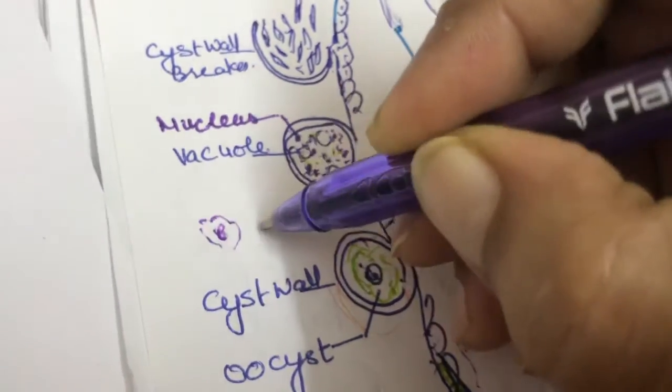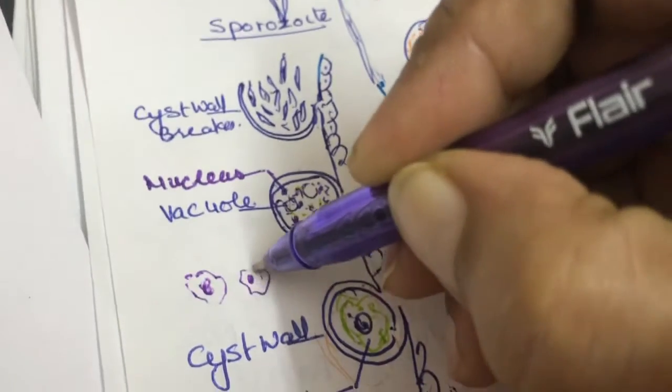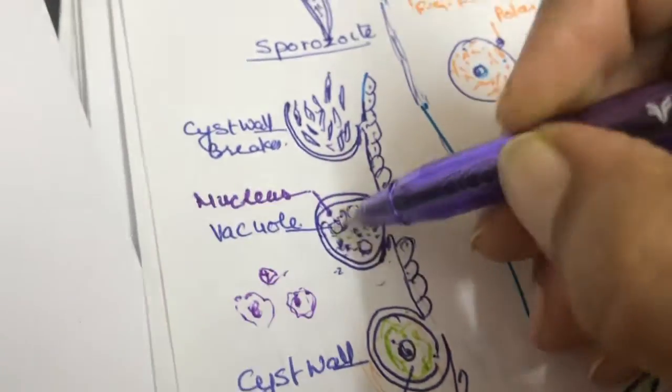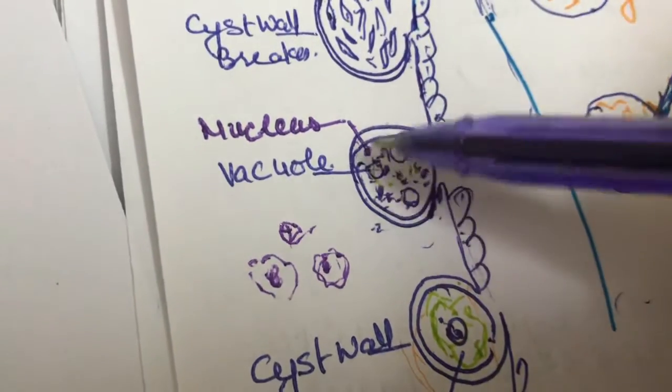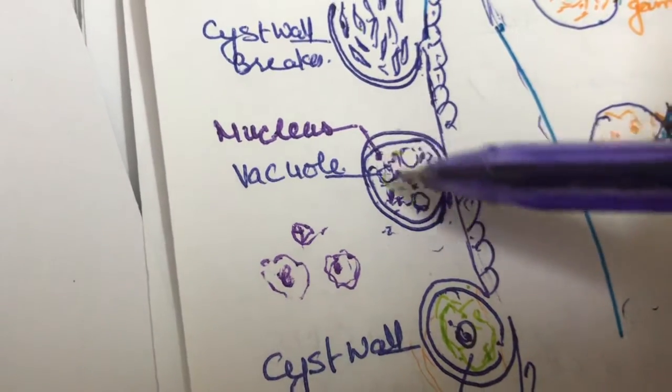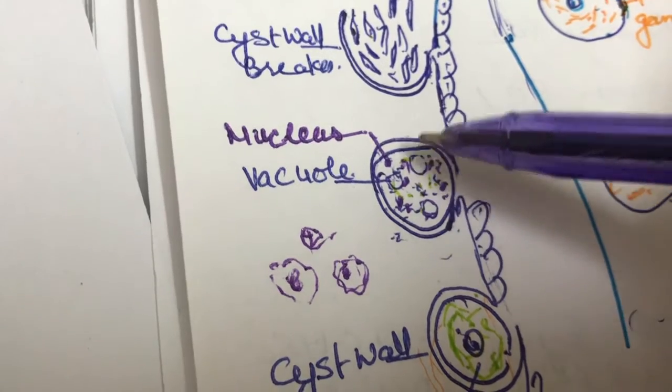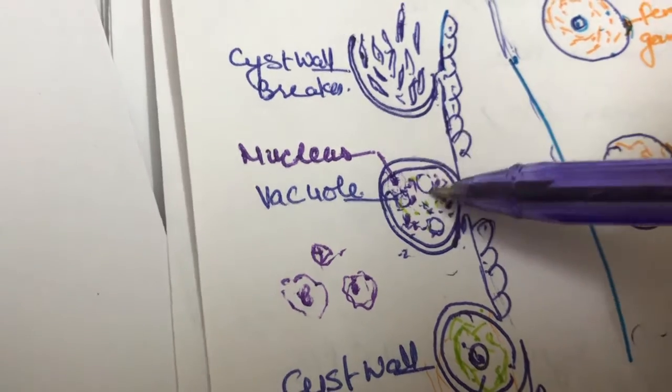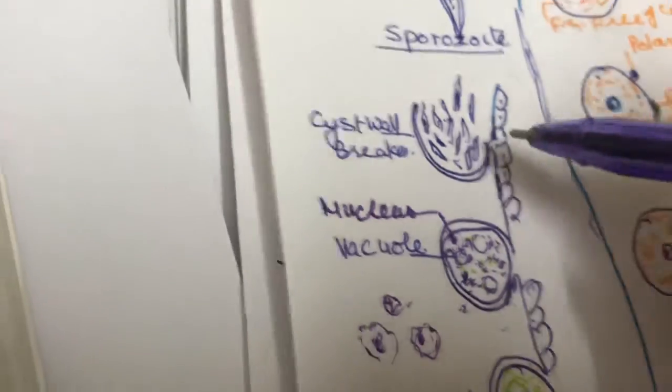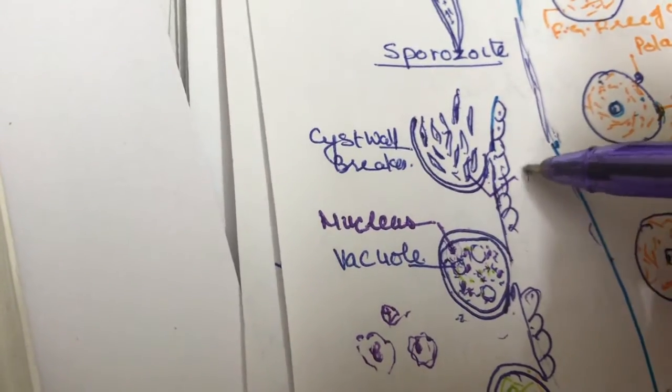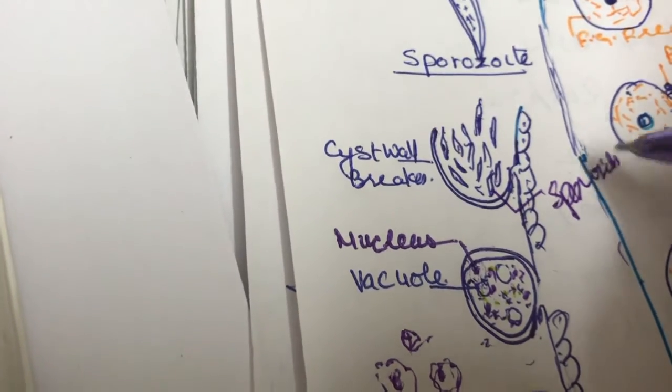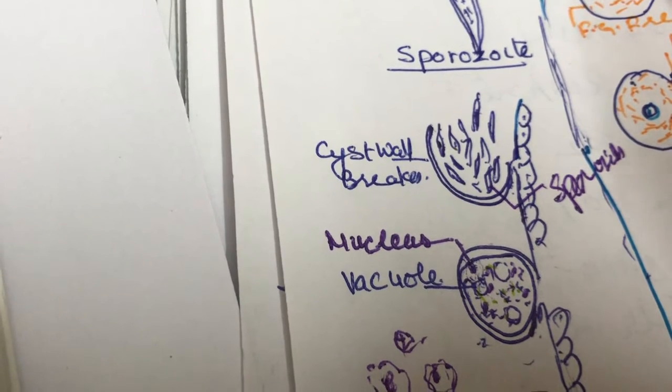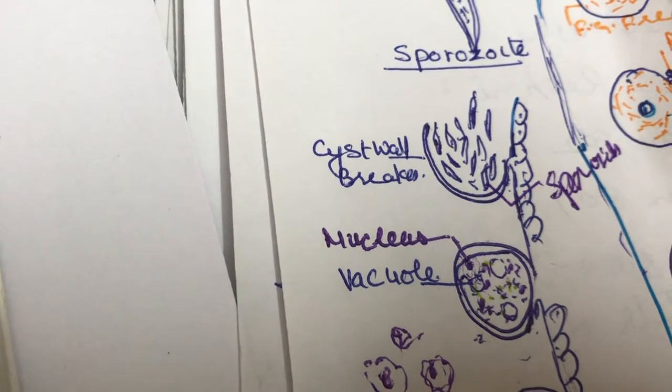Daughter nuclei form, and then each daughter nucleus has a small amount of cytoplasm. So there will be a nucleus having small cytoplasm and the surrounding bodies form, taken upon as sporozoites. This is a sort of sporozoite.